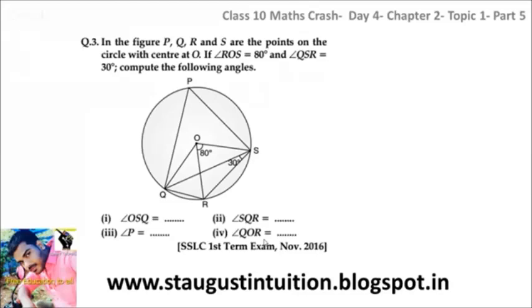P, Q, R, S are the points on the circle. Angle ROS is equal to 80 degrees and angle QSR is equal to 30 degrees. Compare the following angles.